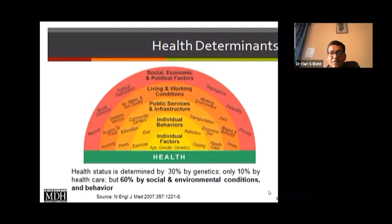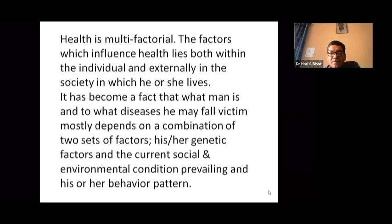This figure of health determinants is from the New England Journal of Medicine, 2007. Health status is determined as follows: 10 percent by genetics — factors inherited from our ancestors; only 10 percent by healthcare; but 60 percent by social and environmental conditions and individual behavior. Individual behavior alone is responsible for 60 percent of health status, so health is multifactorial — influencing factors lie both within the individual and externally in society.